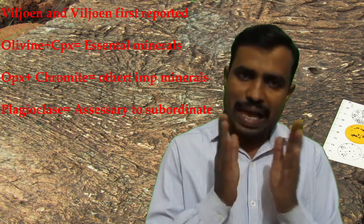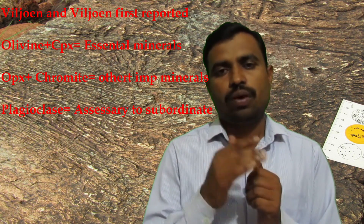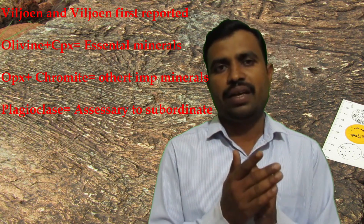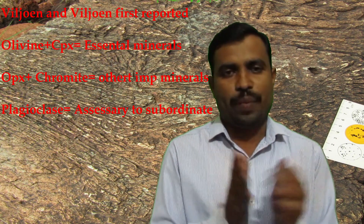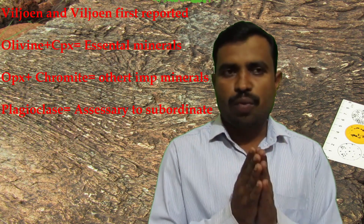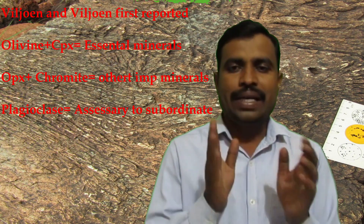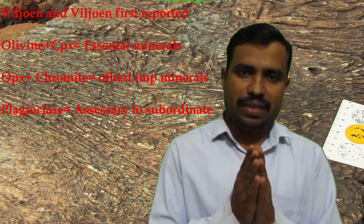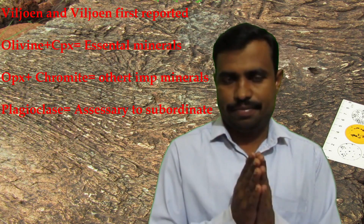Plagioclase is the accessory to subordinate mineral which is present in the komatiite. Most of the komatiites are rich sources of chromite and platinum group elements, that is the PGE mineralization.